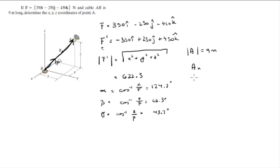So to find the components, you multiply the magnitude times the cosine of the angles.